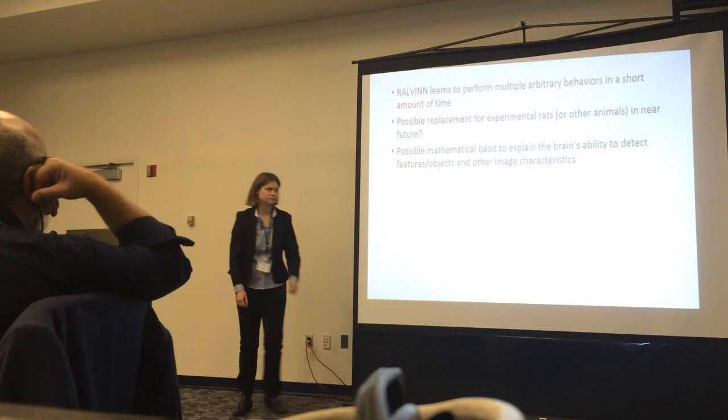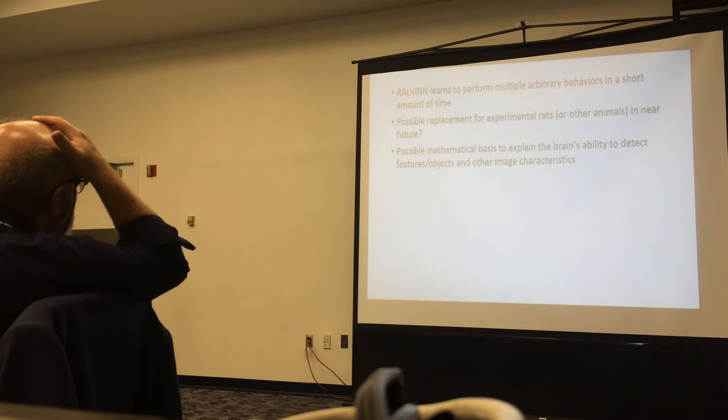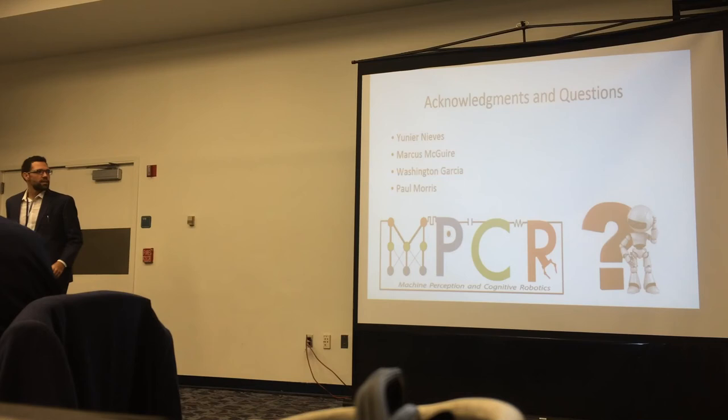So as you can see, Ralvin learns to perform multiple arbitrary behaviors in a short amount of time, less than two minutes. And so this could actually be a possible replacement for laboratory rats or any other experimental animals. It's kind of immoral what we do to these rats and these other animals. It doesn't really make sense in the 21st century. And also, through other things we're working on in the lab, we've actually shown a mathematical basis to explain these computations that the brain is making with all of its cells. There's a mathematical basis for everything that it does.